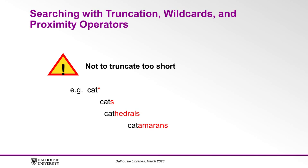An example of truncating too short would be entering 'CAT*', which could retrieve articles on cats, cathedrals, catamarans, and more.